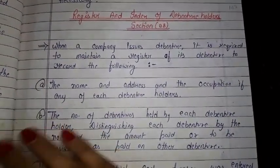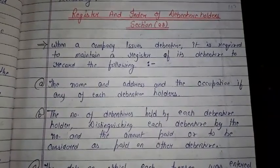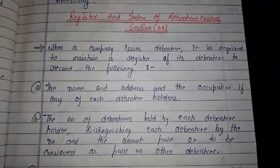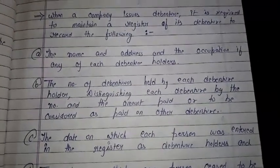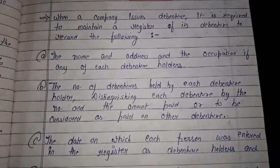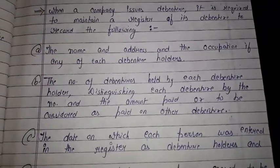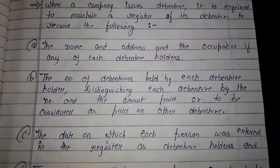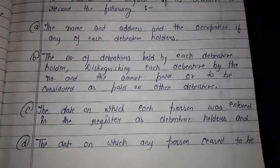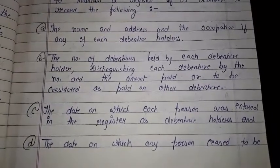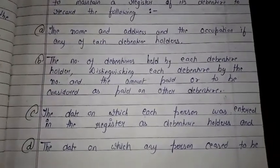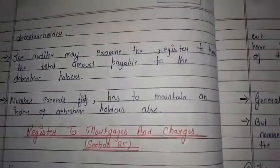What are the details? The name, address, and occupation of each debenture holder. The number of debentures held by each debenture holder, distinguishing each debenture by number, and the amount paid or to be considered as paid on each debenture. The date on which each person was entered in the register as a debenture holder, and the date on which any person ceased to be a debenture holder.